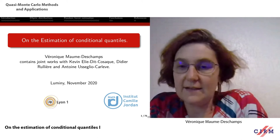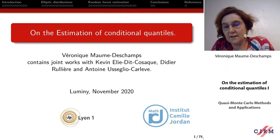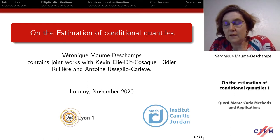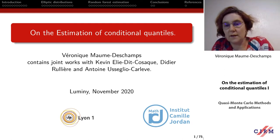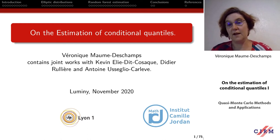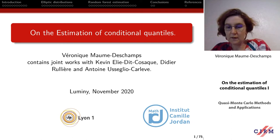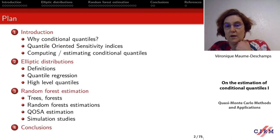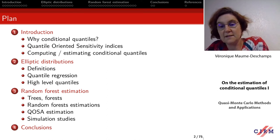I will speak, as Robert said, on the estimation of conditional quantiles. This is part of talks containing works done with Kevin Eddikozak, a PhD student in Lyon, Didier, a colleague at École des Mines de Saint-Étienne, and Antoine Calvert, a former PhD student now in Rhine. I will begin with some motivation on why I decided to speak about conditional quantiles, and then present two main ways to deal with this.